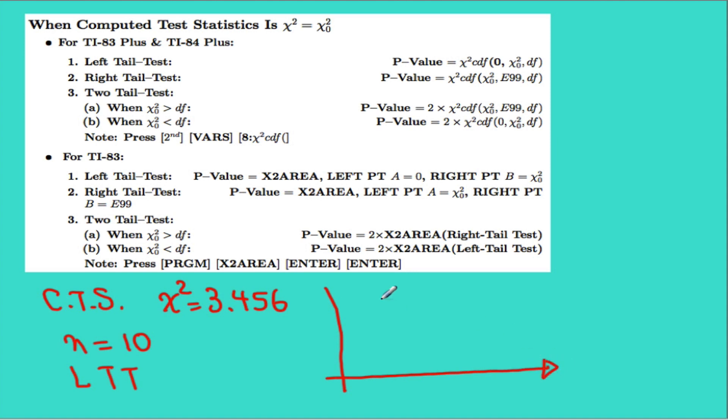So we're using chi distribution for this, meaning that the graph begins at 0 and will be skewed to the right. It's a left tail test, so this area is the p-value, which goes from 0 to our computed test statistic of 3.456.